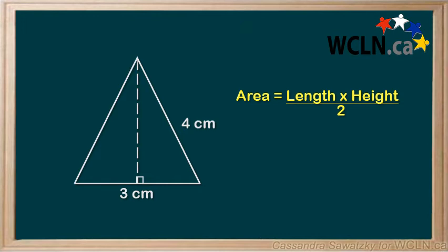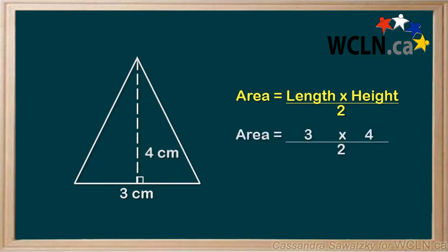You would have to use the Pythagorean theorem in order to find the true height. In this case, we are given the height. So we can multiply 3 times our height, which is 4, and then divide it by 2. And this gives us 6 cm squared.